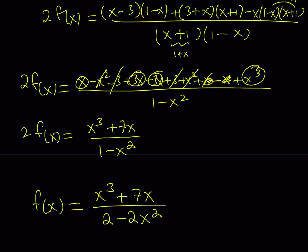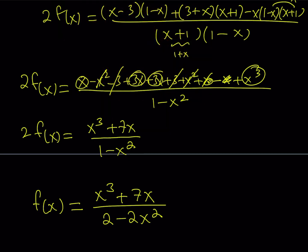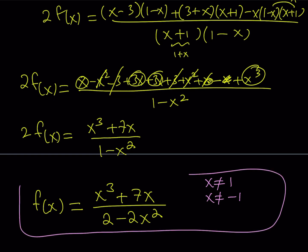So f of x equals (x³ plus 7x) divided by (2 minus 2x²). As you can see, f of x does not allow the values x equals 1 or x equals negative 1, so those values are not in the domain. This brings us to the end of this video. Thank you for watching, I hope you enjoyed it. Please let me know — don't forget to comment, like, and subscribe. I'll see you tomorrow with another video. Until then, be safe, take care, and bye-bye.